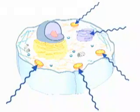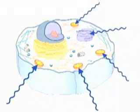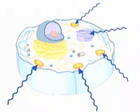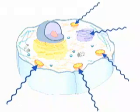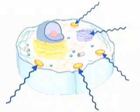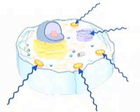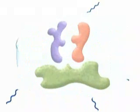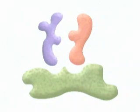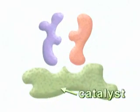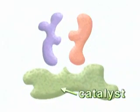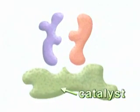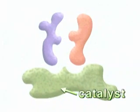At any moment in time there are millions of chemical reactions going on at the molecular level in every cell. Virtually all of these reactions need catalysts to provide a site for the reaction and to coordinate the energy flow.